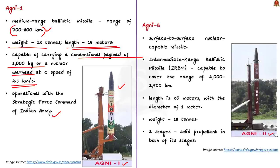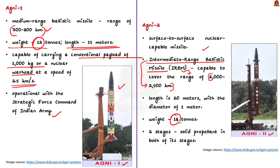Agni 2 is a surface-to-surface nuclear-capable intermediate-range ballistic missile, IRBM, capable of covering a range of 2,000 to 2,500 kilometers. Its length is 20 meters with a diameter of 1 meter and it weighs 18 tons. Agni 2 has two stages with solid propellant in both stages. It was among the first weapons to enter the Indian strategic force arsenal.